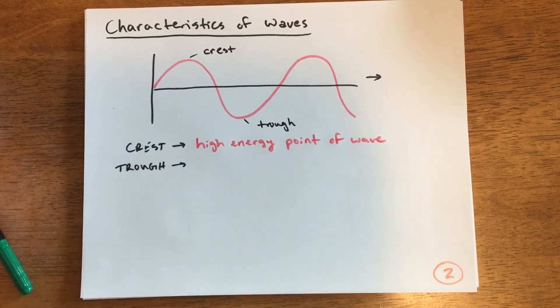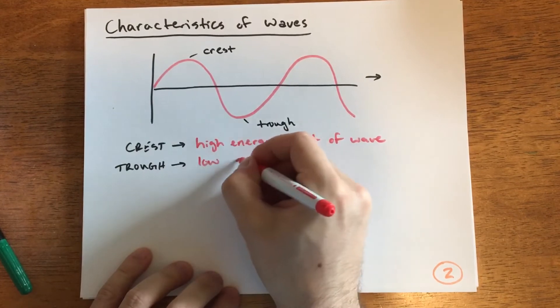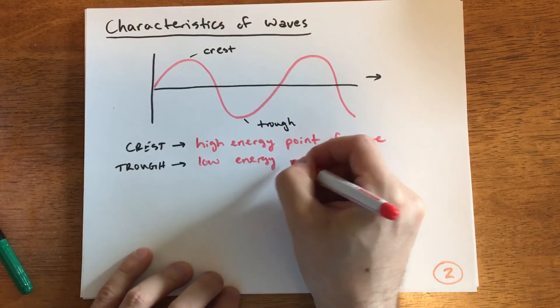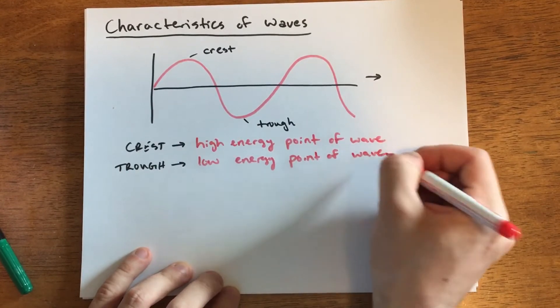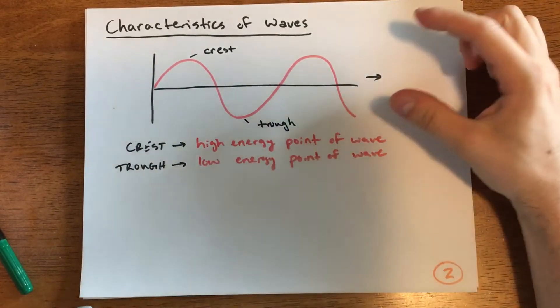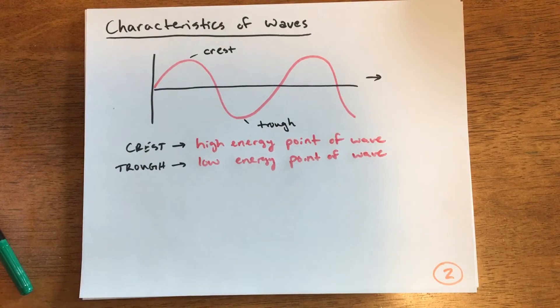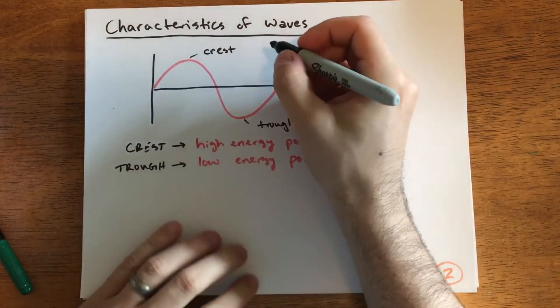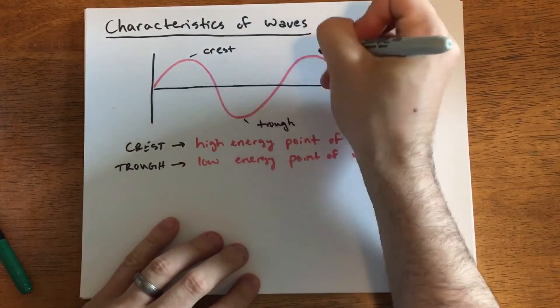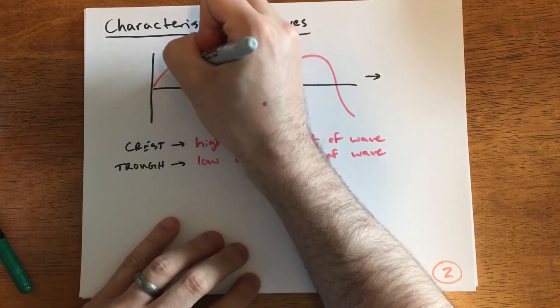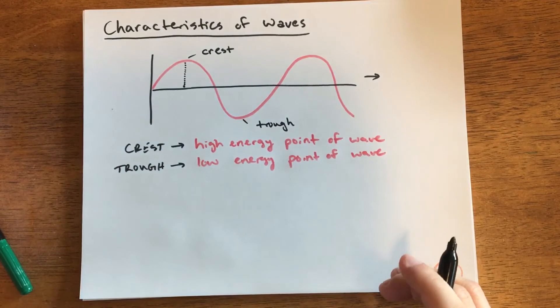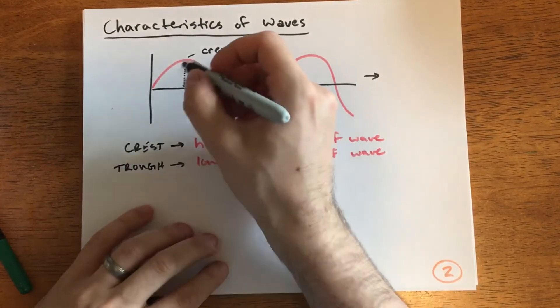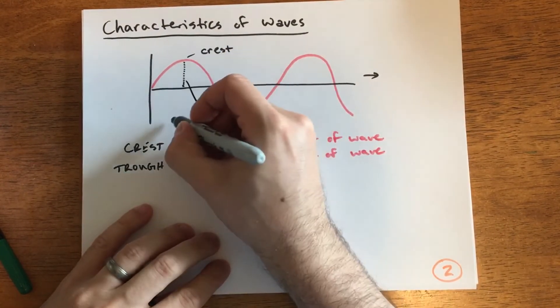Waves can be very tall or very short. Sometimes people measure from top to bottom, but typically we measure from the middle to either the top or the bottom. This is called the amplitude.